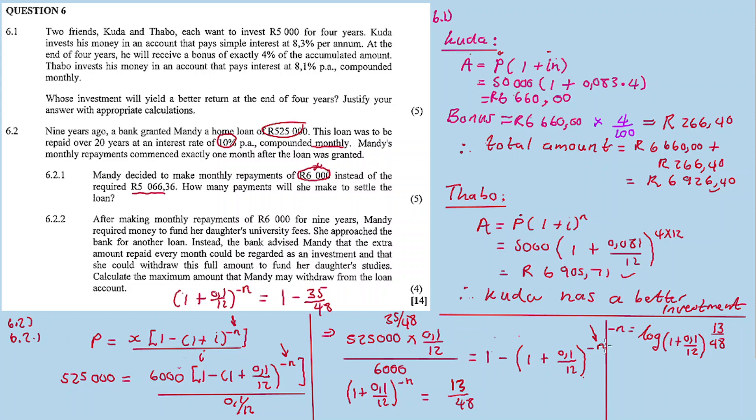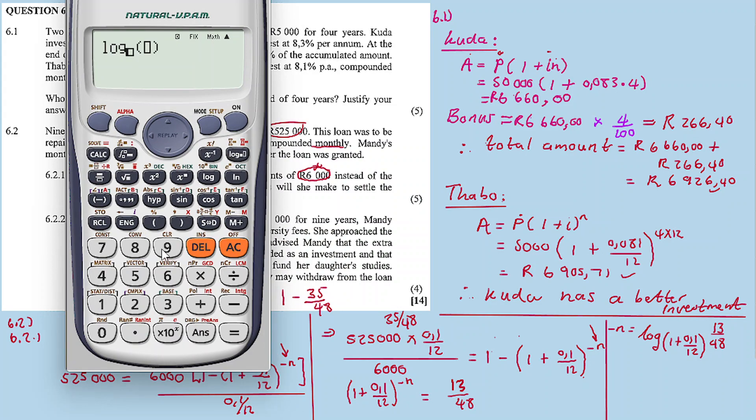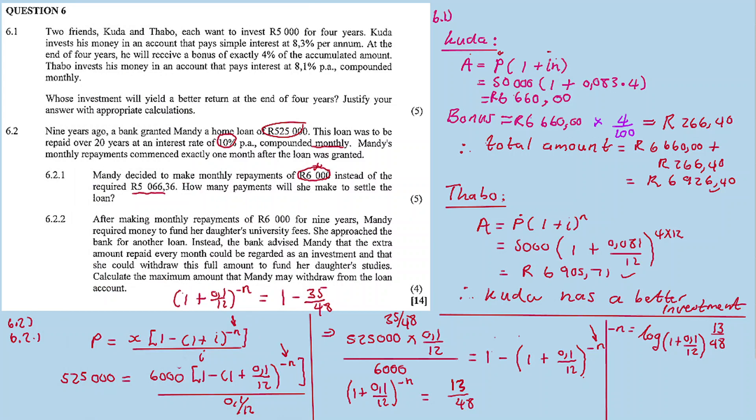Apply the log definition to make n the subject: -n equals log base (1 + 0.1/12) of 13/48. Calculating: log(13/48) / log(1 + 0.1/12) equals -157.40. So -n equals -157.40, therefore n equals 157.40. Round up to 158 repayments, since 0.4 counts as a repayment.